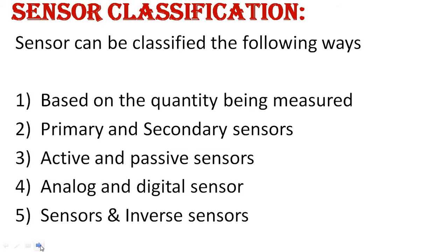The fourth type is analog and digital sensors, based on what type of components are used inside the sensor. The fifth and last type is sensor and inverse sensor, based on the operation — a sensor converts a physical parameter into another form, while an inverse sensor converts that other form back into the original physical quantity.